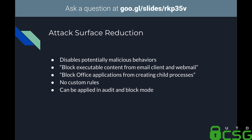Attack Surface Reduction is the closest thing to a built-in intrusion prevention system in Windows, attempting to disable potentially malicious behaviors. It allows you to block executable content from email and webmail, block Office applications from creating child processes, and about four other rules — though there's no apparent way to add custom rules, so you're limited to those six or seven behaviors. You can set it to audit mode (logging to Event Viewer) or block mode (stopping the behavior and showing a Windows toast notification).